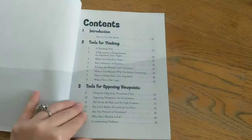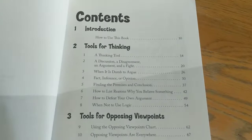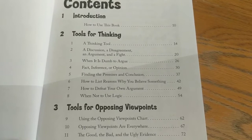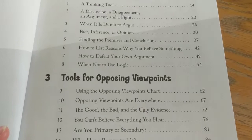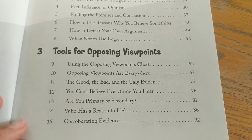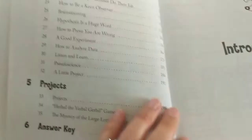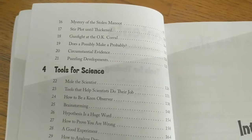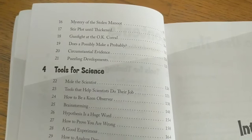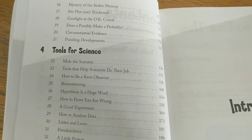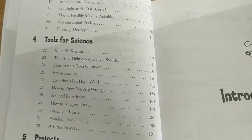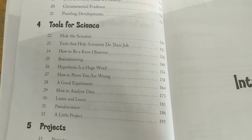The Thinking Toolbox is the next book in the series from the authors of The Fallacy Detective. It's not really about logical fallacies — it's more about reasoning. The table of contents covers: discussion, disagreement, argument, and fight; when is it dumb to argue; fact, inference, or opinion; tools for opposing viewpoints; the good, the bad, and the ugly evidence — teaching kids to recognize good and bad evidence; and who has a reason to lie. You should know that there is a religious element to these books — they do occasionally quote from the Bible, mostly Psalms. If that bothers you, it's not a major thing, but it's there.